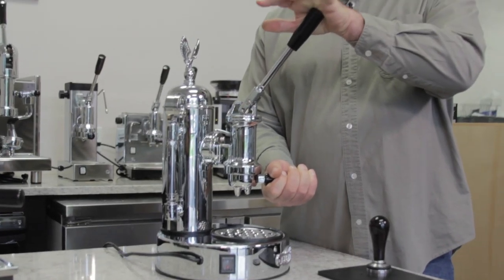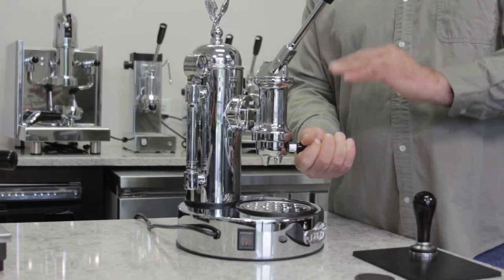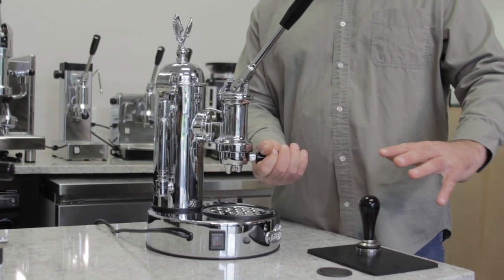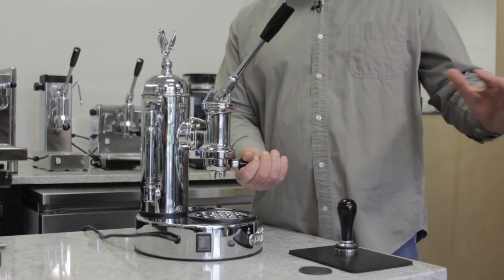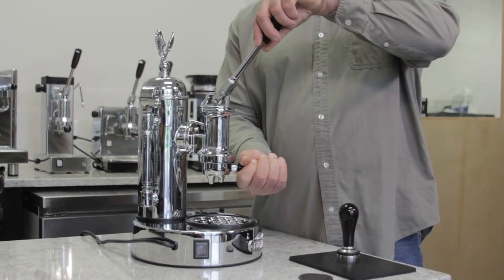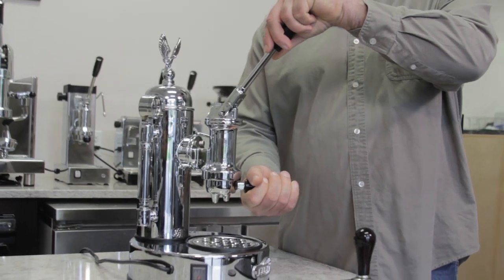One safety thing to remember is not to take the portafilter off immediately after the extraction of the shot. The reason is no lever espresso machines, piston, spring piston, or non-spring, they don't have solenoid valves. So if you do take it off before 10 to 20 seconds, the portafilter will go flying off and coffee grinds will splurt everywhere. So really important to wait 10 to 20 seconds before you remove the portafilter off after the espresso extraction.